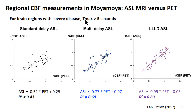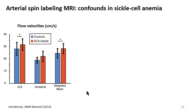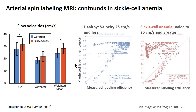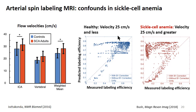Across 15 Moyamoya patients, even though there are correlations with each different ASL scan against PET, it's the long-label-long-delay that has the strongest correlation — so you have to adjust the post-label time. Additionally, in other patients such as those with sickle cell anemia, there are differential — particularly increased — flow velocities in major inflow arteries, which may lead to different labeling efficiencies from what we predict. This is another example of how multimodal comparison helps address ASL confounds.